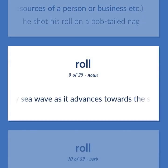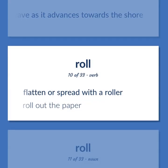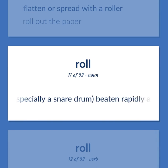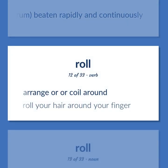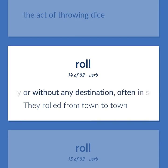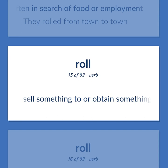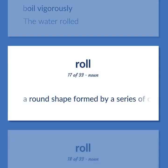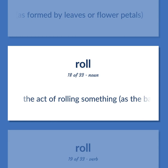ROLL (continued): A long heavy sea wave as it advances towards the shore. Flatten or spread with a roller — 'roll out the paper.' The sound of a drum, especially a snare drum, beaten rapidly and continuously. Arrange or coil around — 'roll your hair around your finger.' The act of throwing dice. Move about aimlessly or without any destination, often in search of food or employment — 'they rolled from town to town.' Sell something to or obtain something from by energetic and especially underhanded activity. Boil vigorously — 'the water rolled.' A round shape formed by a series of concentric circles, as formed by leaves or flower petals. The act of rolling something, as the ball in bowling.